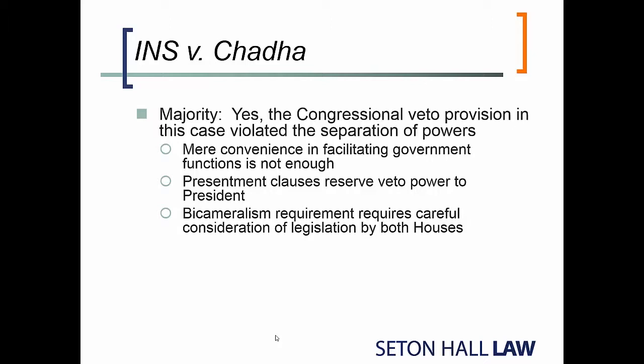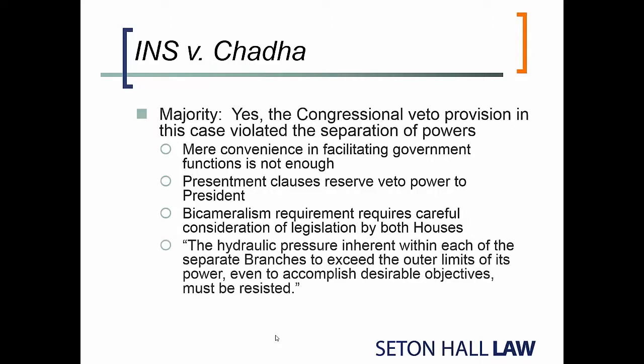The other piece of this is the bicameralism requirement. The Constitution specifies that for legislation to be adopted, the House and the Senate both vote on it, agree on it, present it to the executive, and then the executive approves it or vetoes it. In this instance, the statute allowed either body — the House or the Senate — to adopt a resolution legislatively vetoing what the executive did, and factually in Chadha's case, it was only a House resolution. The majority finds a number of structural problems with this statute. As the majority opinion notes: 'The hydraulic pressure inherent within each of the separate branches to exceed the outer limits of its power, even to accomplish desirable objectives, must be resisted.'